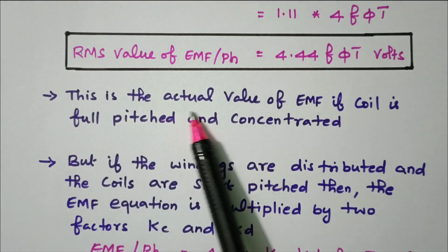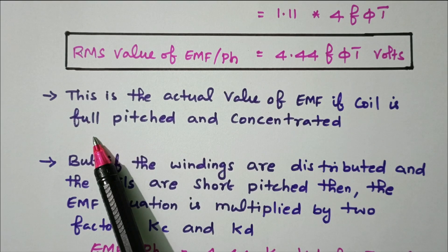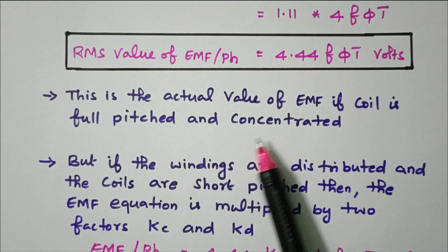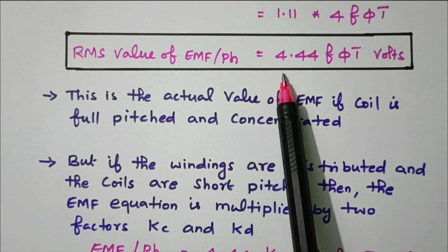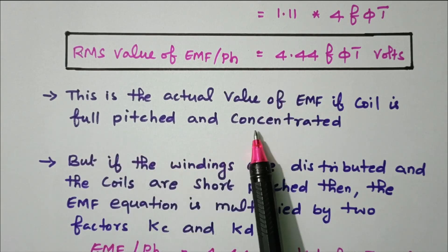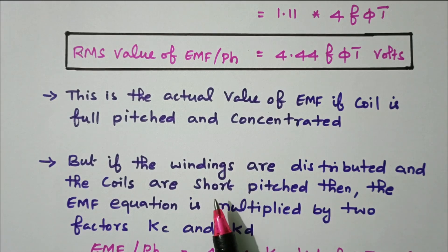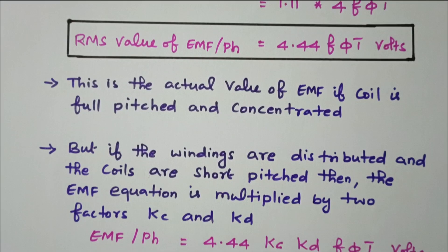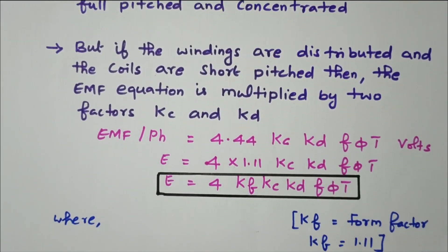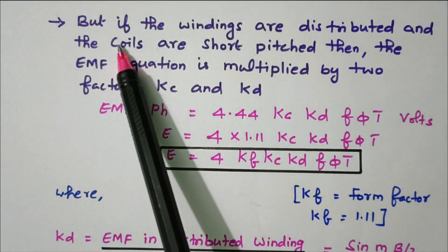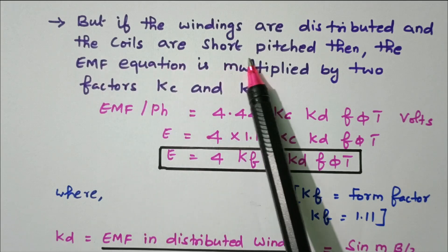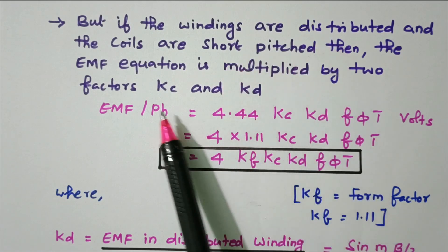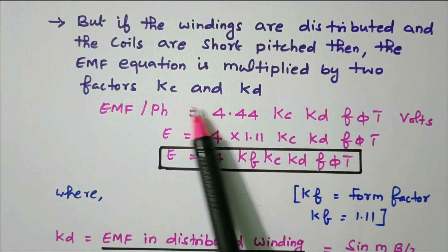This equation (E = 4.44fΦT) is the actual value of EMF only if the coil is full-pitched and concentrated. There are many types of windings available: full pitch, short pitch, concentrated, and distributed winding. This equation applies only for full-pitched and concentrated winding. If the windings are distributed and coils are short-pitched, the EMF equation must be modified by multiplying by two factors: Kc and Kd.